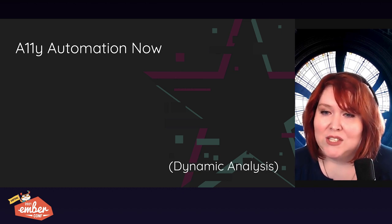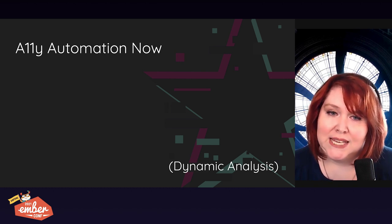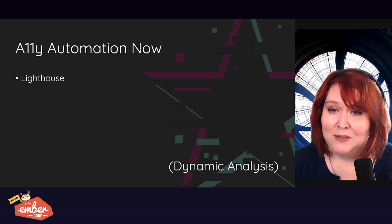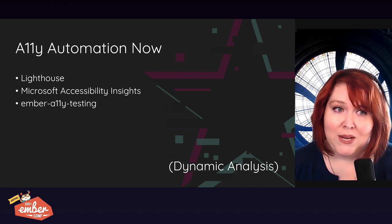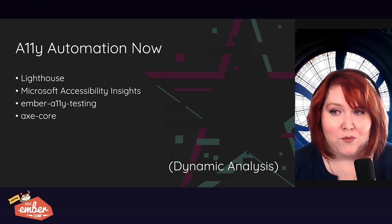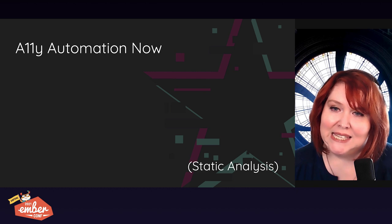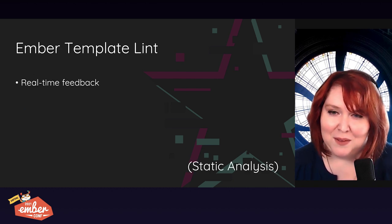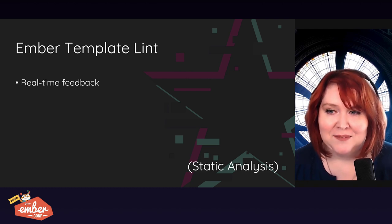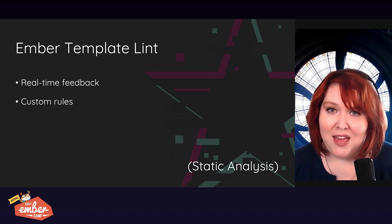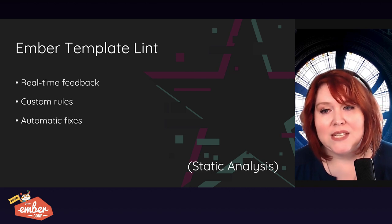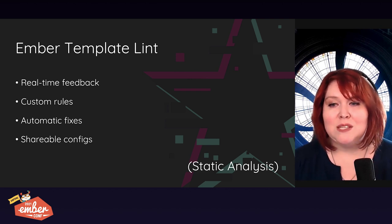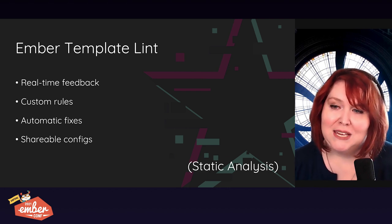Today, developers have access to automated testing through the axe-core library that can be integrated into our CI and CD mechanisms that are already used to test and deliver our code. We have a lot of options: we can use Lighthouse, or Microsoft's Accessibility Insights, or the Ember A11y testing add-on, or even the axe-core library itself. For static analysis, we can use ESLint, although it doesn't have any accessibility support, and we can also use Ember Template Lint. Developers can get linting feedback while they're writing their code, and it supports a plugin system that allows teams to define and use custom rules. Some rules have automatic fixes built right in, and running a fix flag will clean up all of the auto-fixable issues. It also supports sharing configs across projects so you can ensure that all of your teams are on the same page.